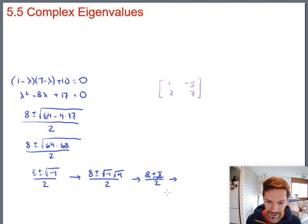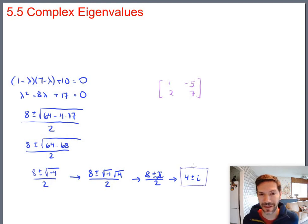So this becomes 8 plus or minus i times 2. It's usually traditional to write the 2 before the i. All over 2. Simplify a little bit more. Factor 2 out of the top, divide by the 2 in the bottom, and you get 4 plus or minus i. Okay, fantastic. We have complex eigenvalues.